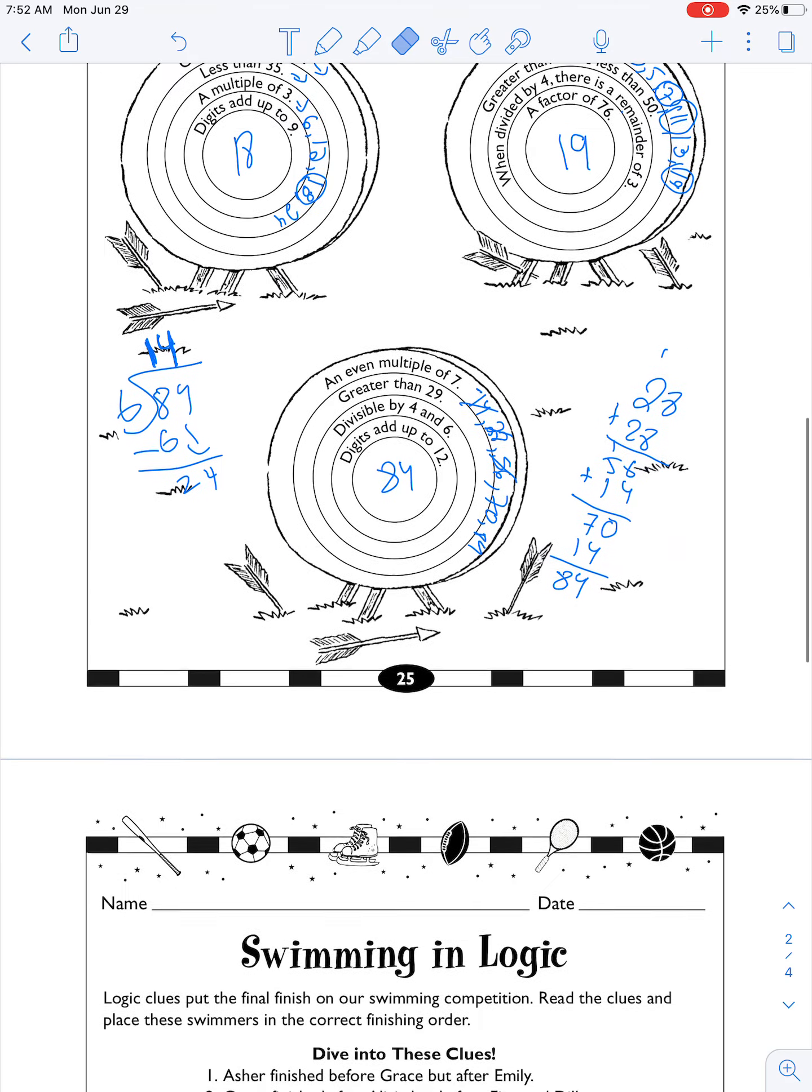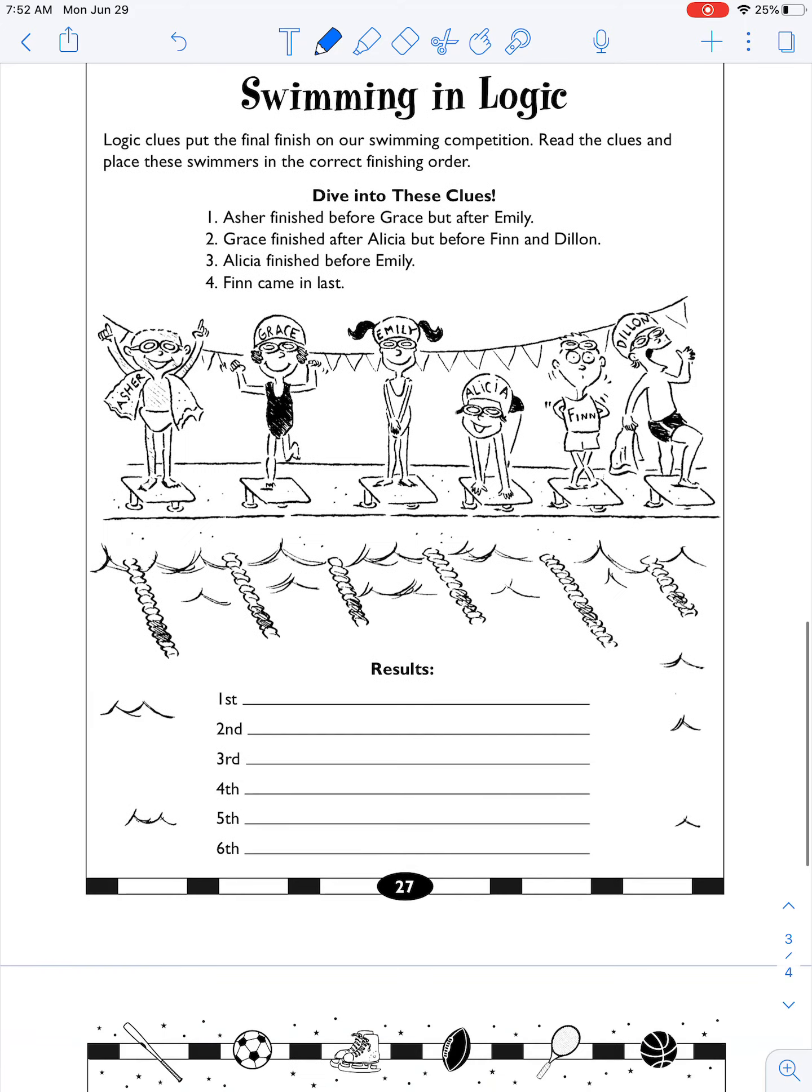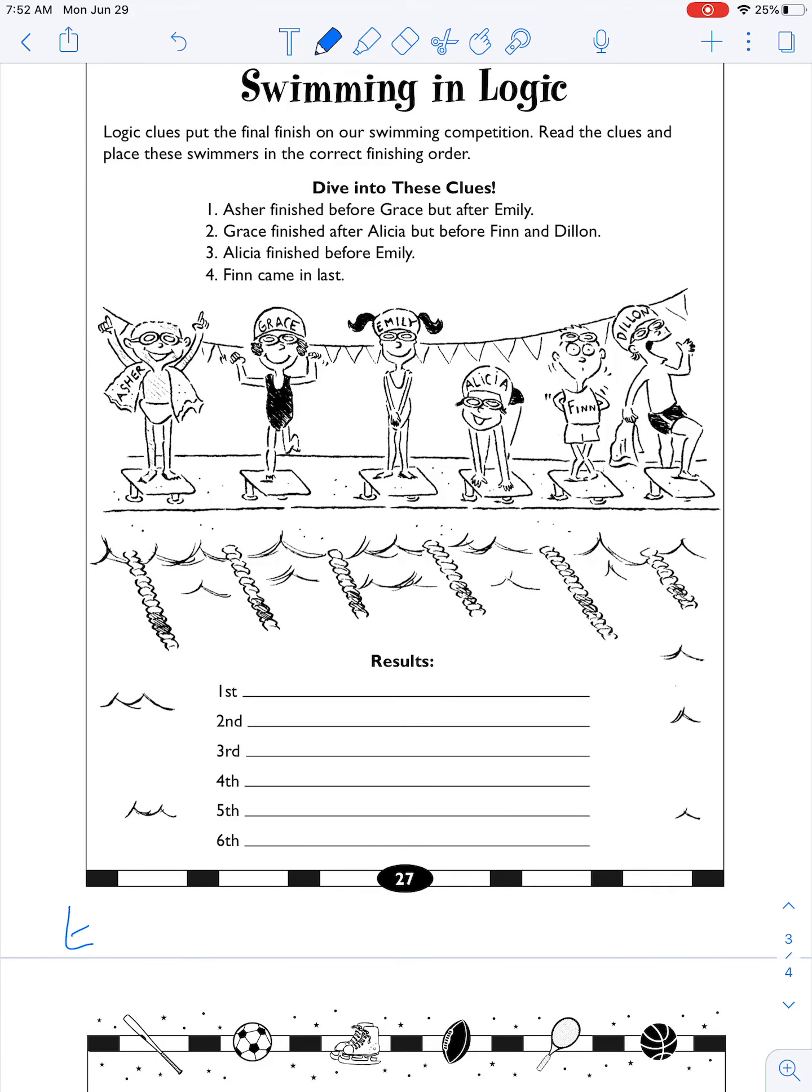Okay, that was good. Nice, a little bit challenging. Next, Swimming in Logic. So we have to figure out the order of the people. This is kind of a cool one, a little bit more like brain gym kind of stuff. So Asher finishes before Grace, but then after Emily. So let's see Asher. Right now I'm just going to work maybe at the bottom. So we know that somehow it's Emily, and then we know that Asher has to go there, and then we know that Grace has to go like that.